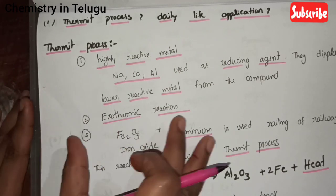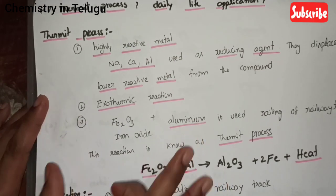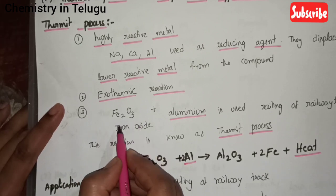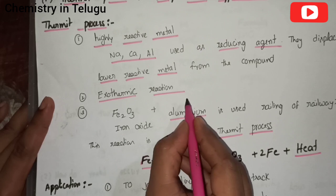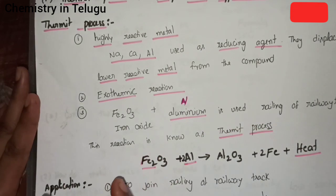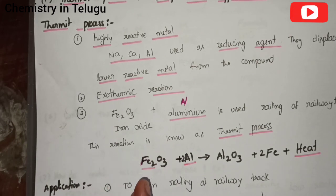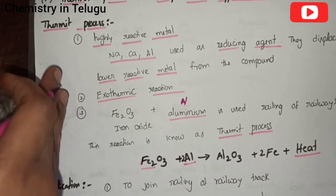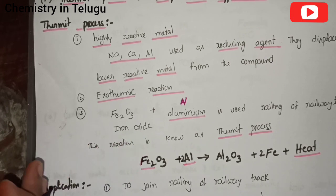This is an exothermic process — it releases heat. The reaction involves Fe2O3 (iron oxide). Aluminum, being highly reactive, is used to join the rails of railway tracks by filling the gap. This is the thermite process.